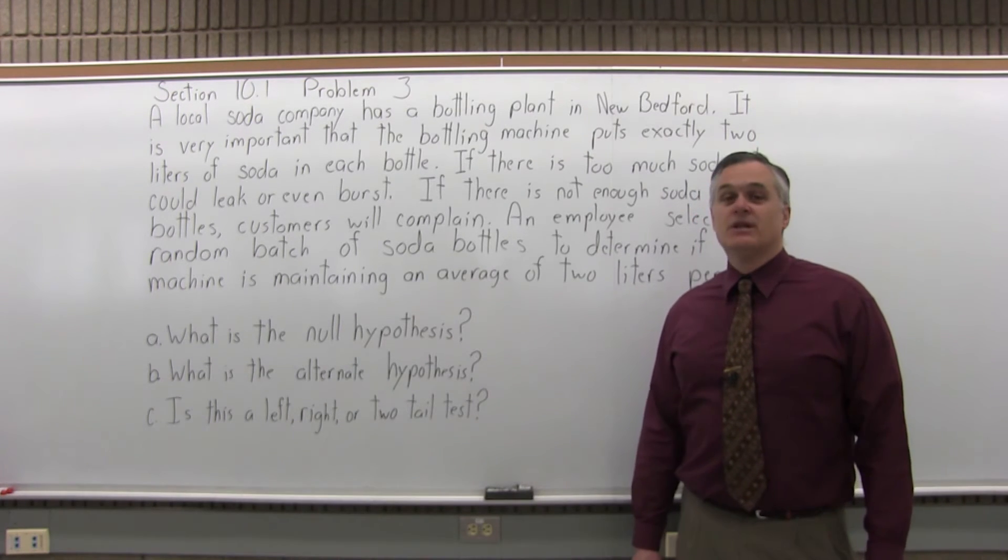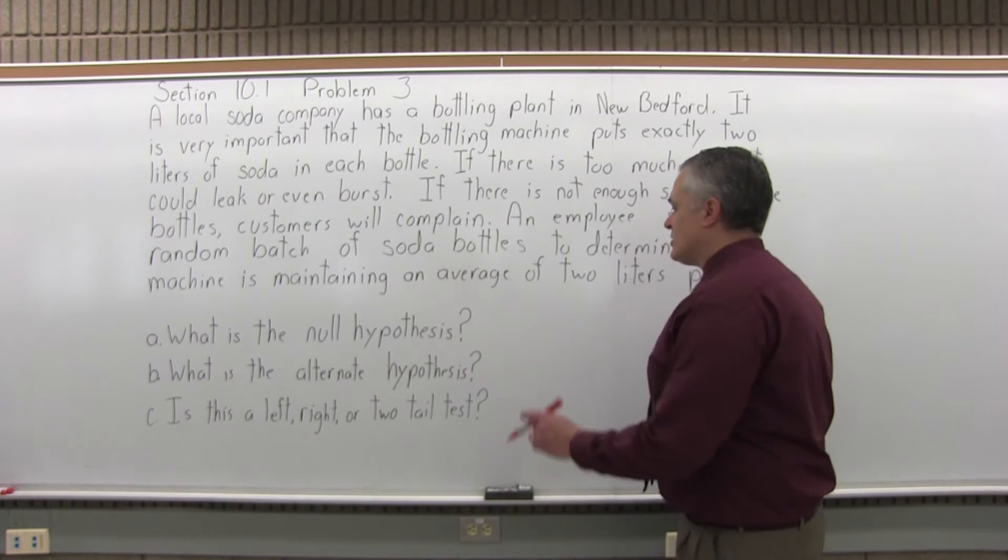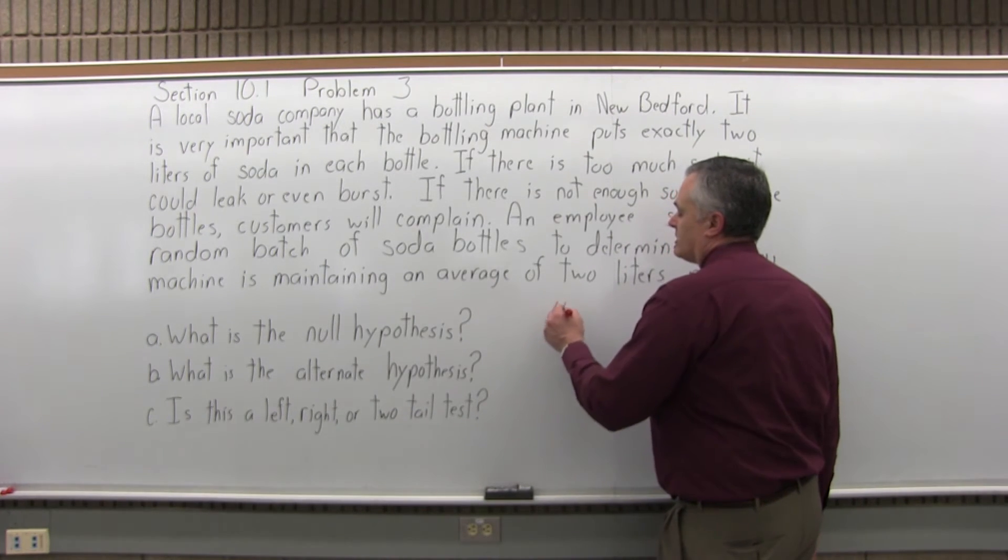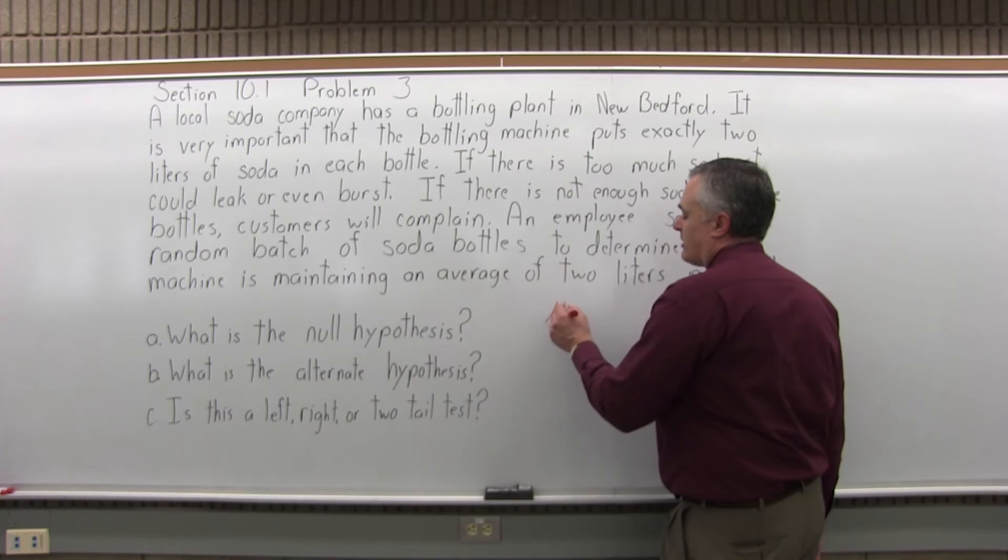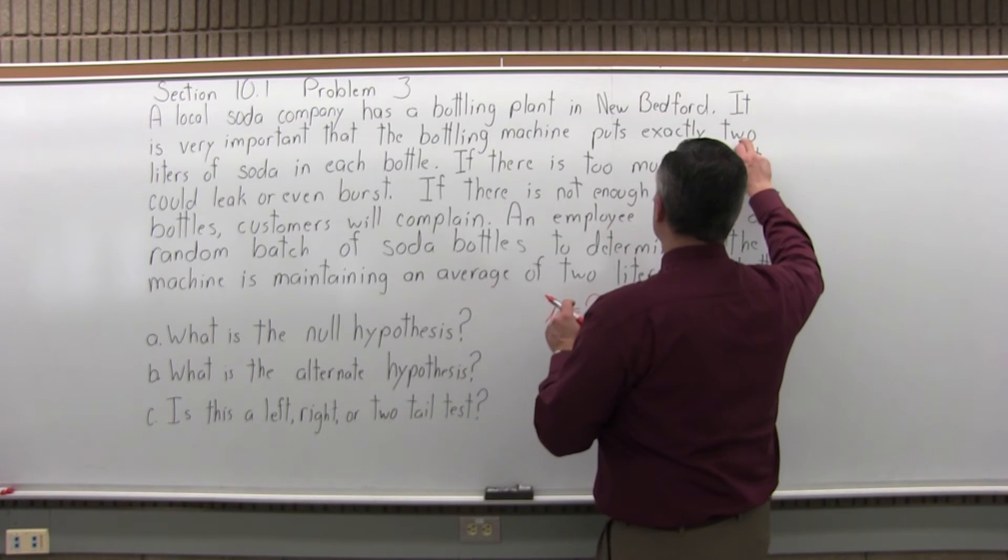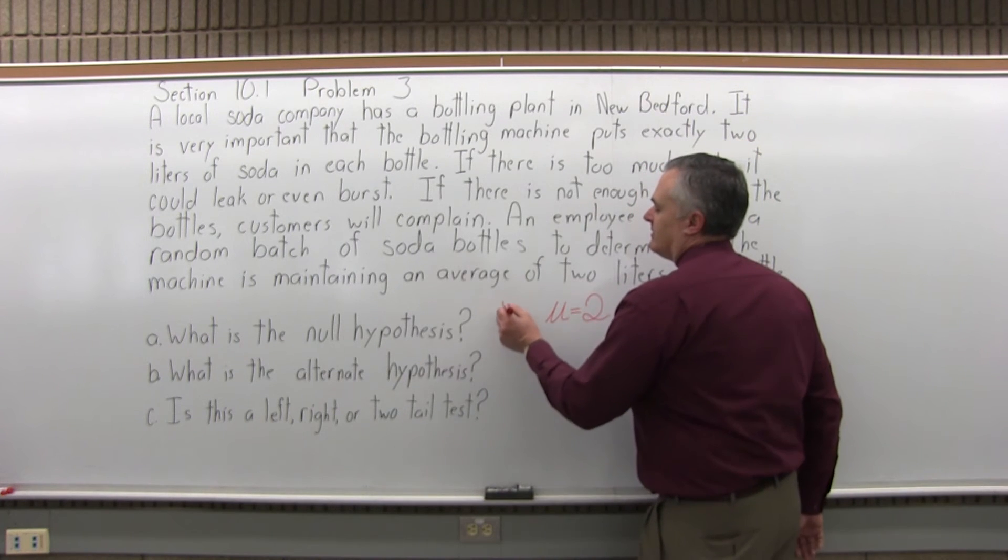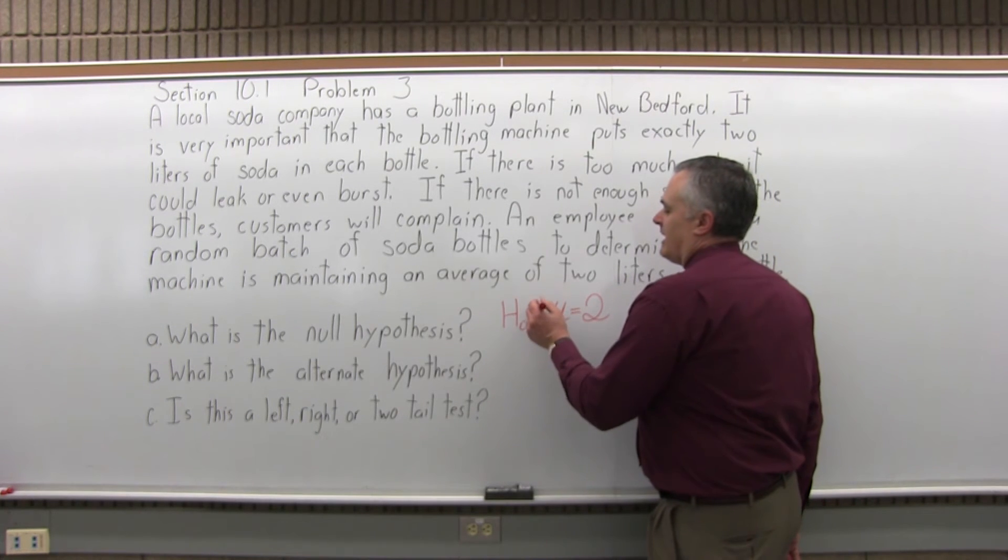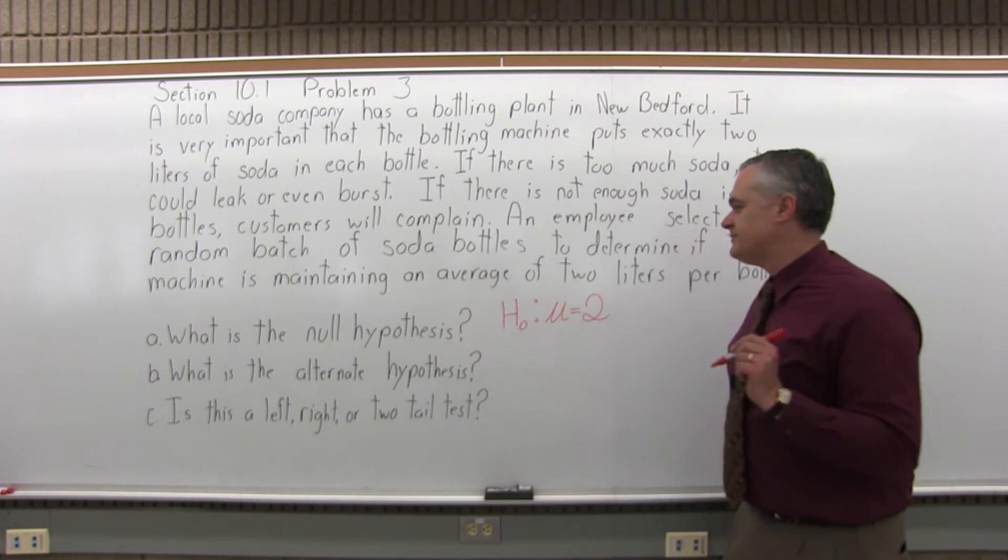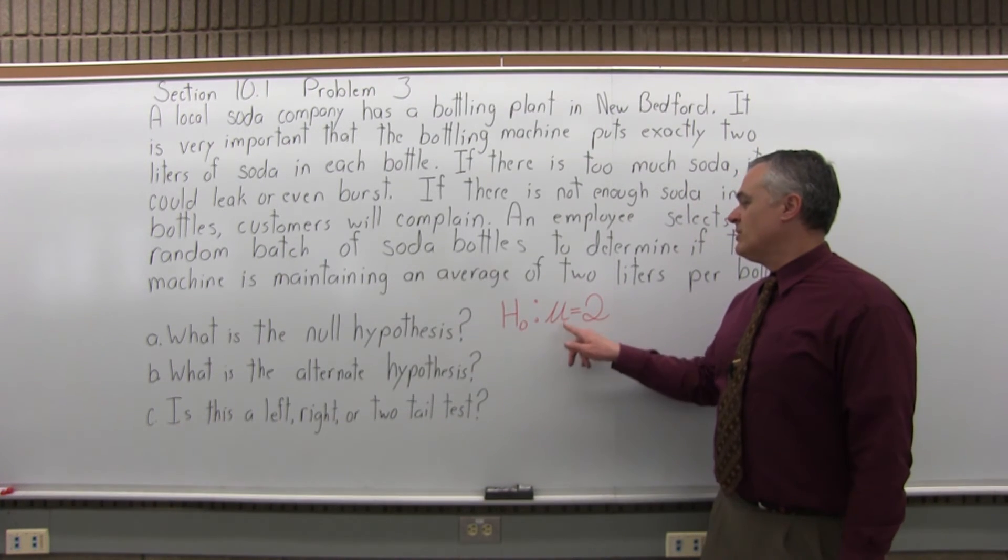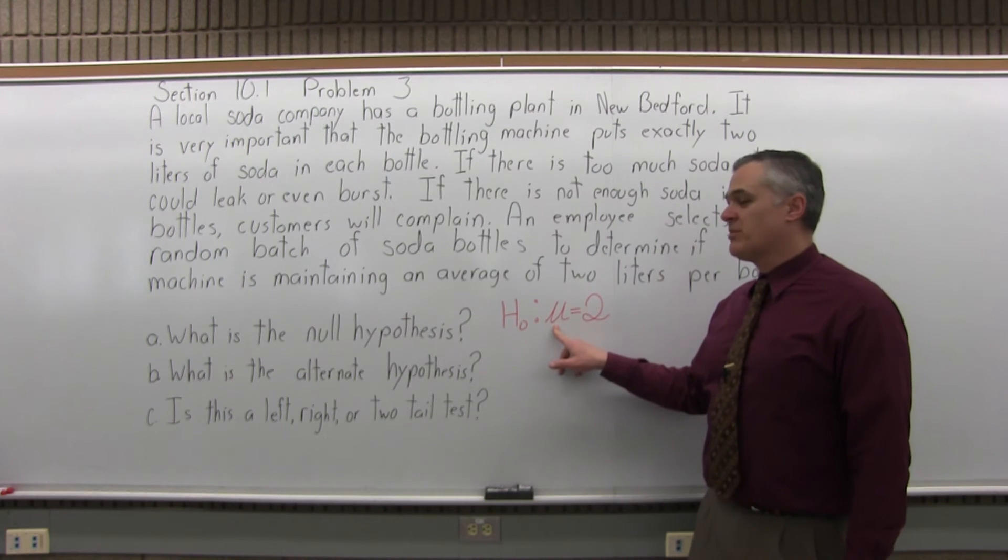So, what is the null hypothesis? The null hypothesis is the one that contains the condition of equality. So we want to see if the average, population average mu, is equal to 2 for 2 liters. And the notation for null hypothesis is a capital H with a subscript of 0. You put a colon. So the null hypothesis, H sub 0, mu equals 2. Again, mu is a symbol for population average.